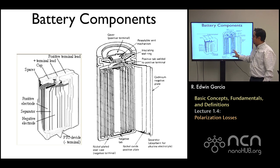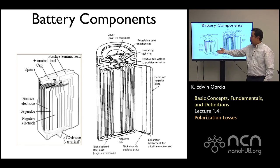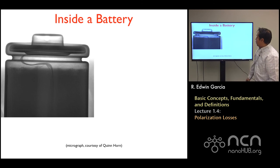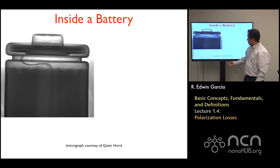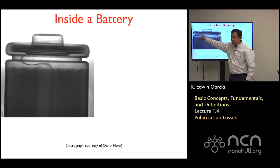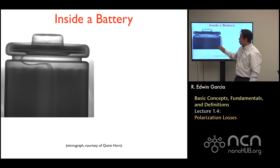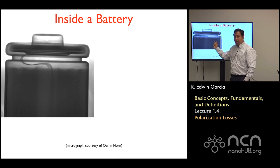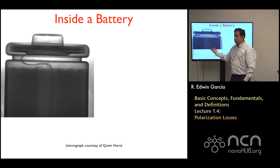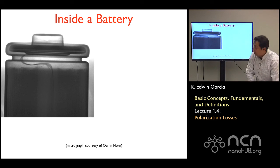Now, let's look more closely inside the battery. What applies to the internal contributions in the cylindrical architecture will also apply conceptually to the prismatic architecture. Here you have a cross-section — an X-ray of a rechargeable battery as measured by Quinn-Horne. You can see the different layers, and you can also see the lead. All the electrons have to flow through that lead and through the cap.